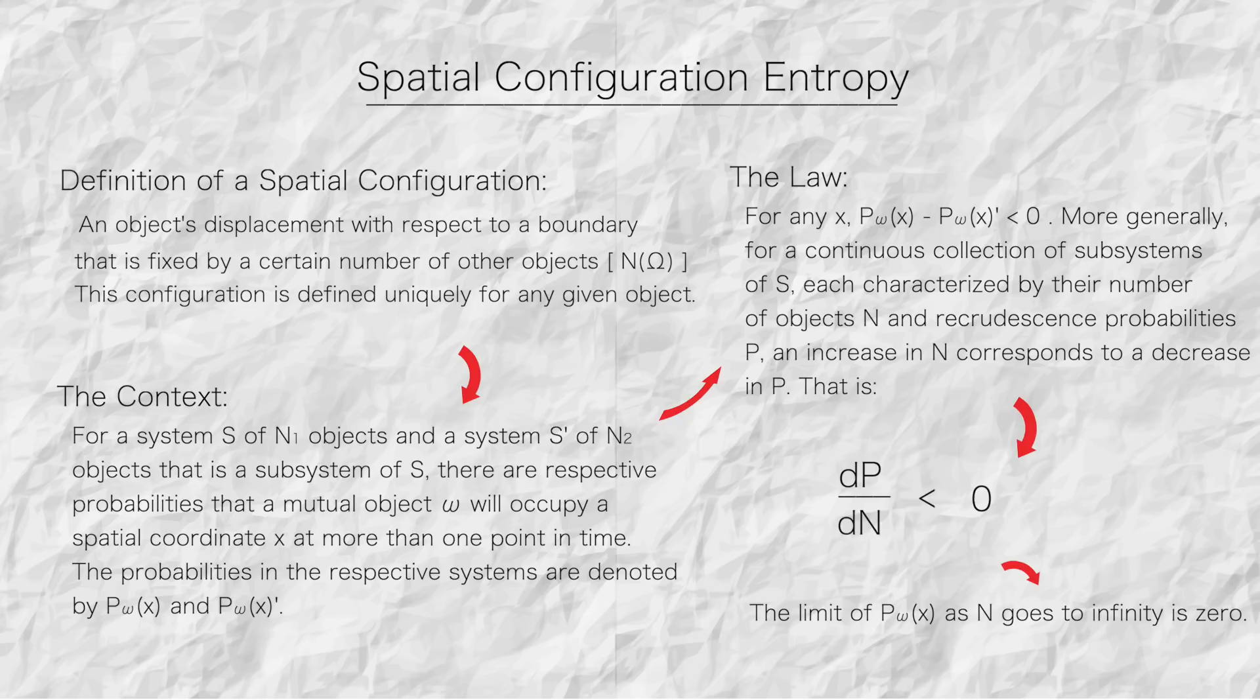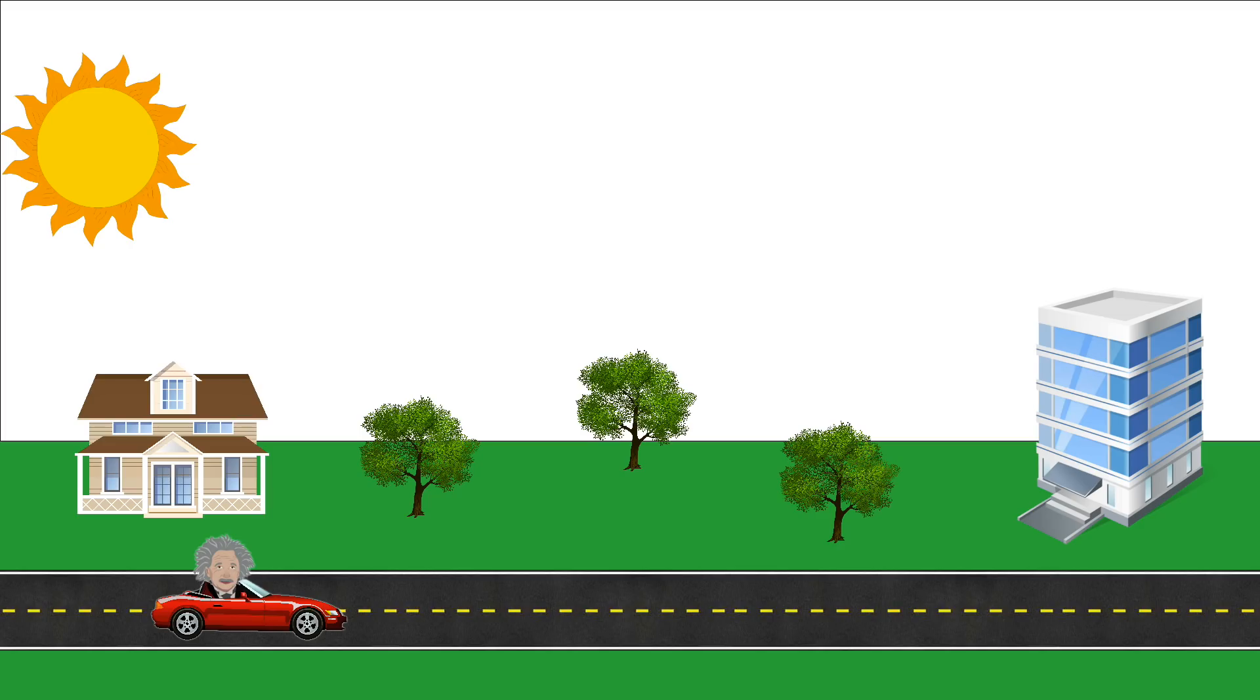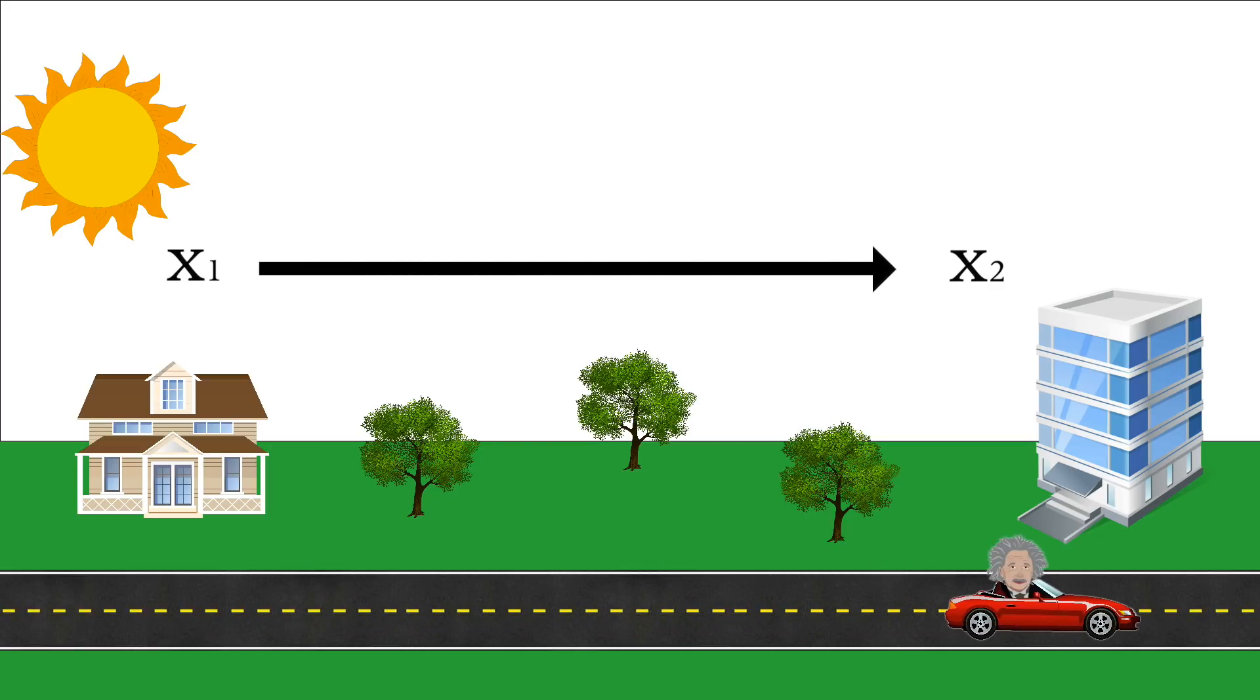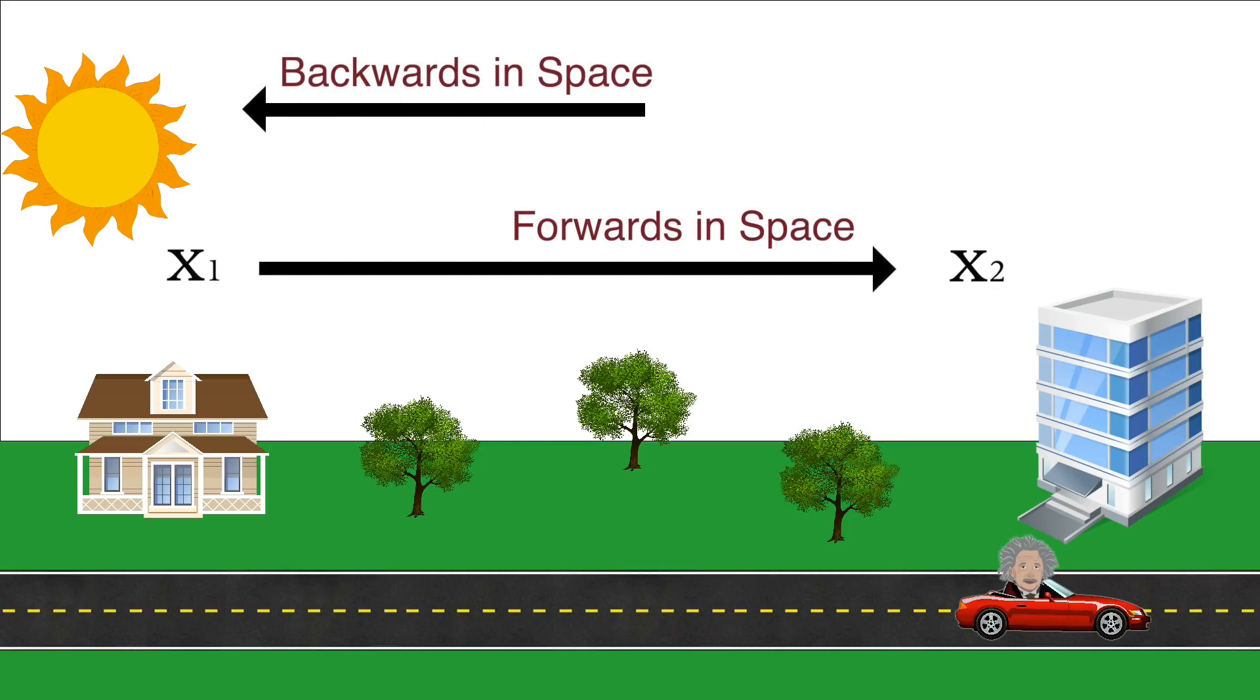Of course, none of this is to say that you can't define a backwards direction in space locally. Using the relative distances of objects in your immediate vicinity, like say your office and your house, you can establish a fixed boundary for your system from which back and forth space travel is readily possible.